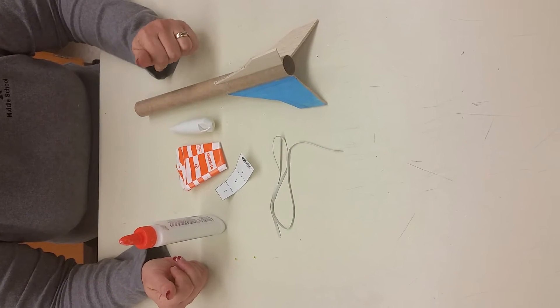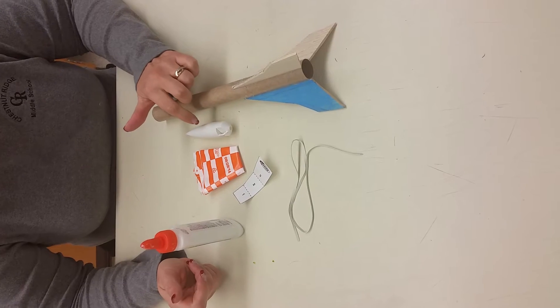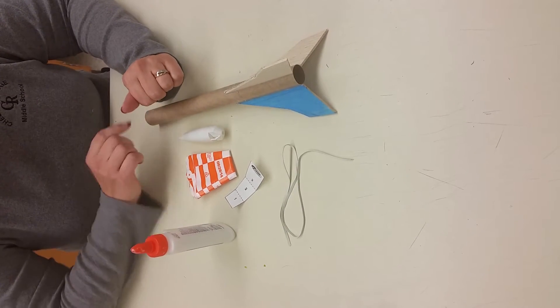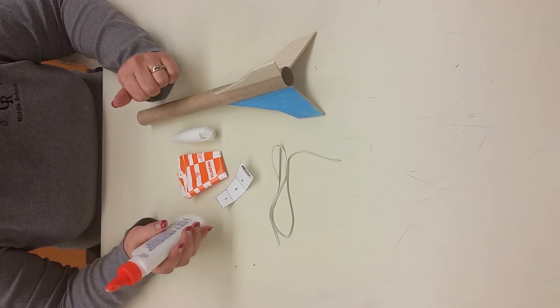In this video we are going to attach our parachute to our nose cone and our shock cord and shock cord mount. You're going to need these supplies and some Elmer's glue.